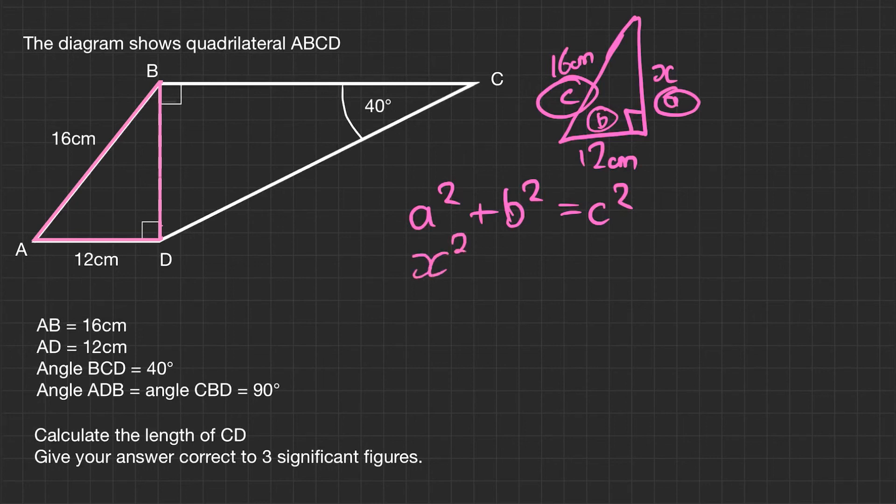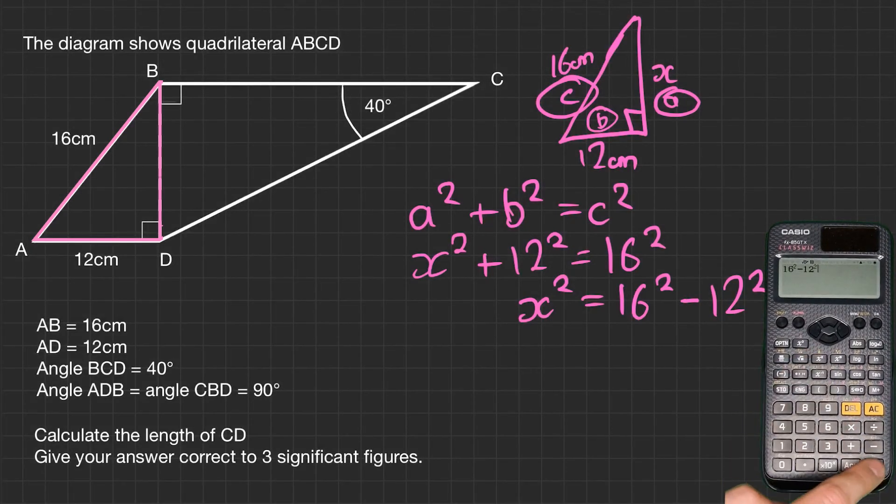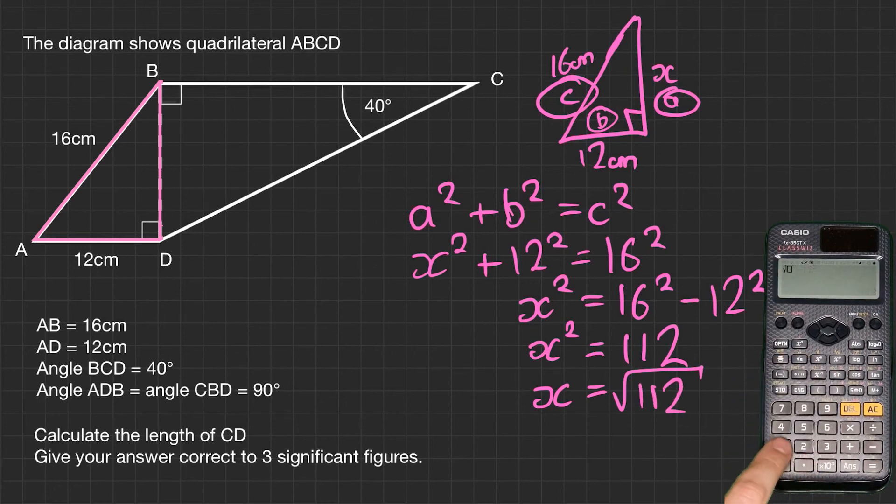Let's substitute those numbers in. So x squared plus 12 squared equals 16 squared. Now we need this in a format which we're going to be able to calculate. So let's take away 12 squared from both sides. So x squared equals 16 squared take away 12 squared. And you'll end up with x squared equals 112. At this point, we need to square root both sides to find what x is. So x equals the square root of 112. Therefore, x equals 4 root 7.